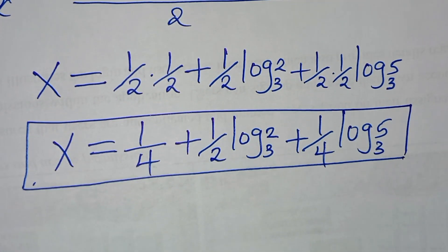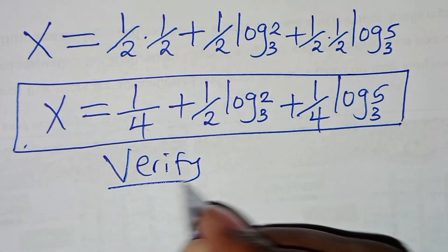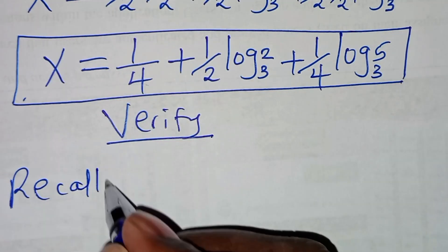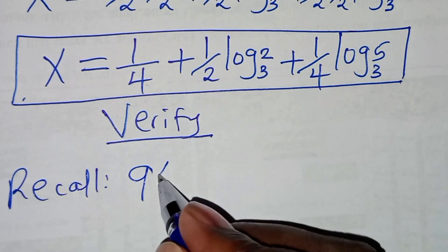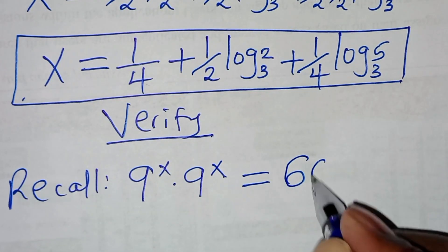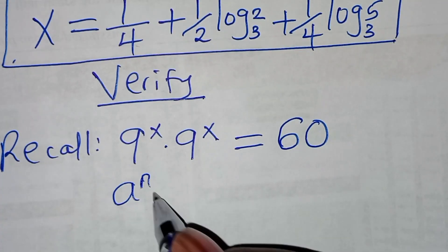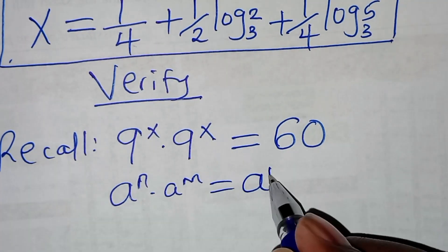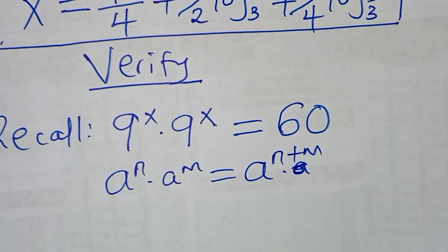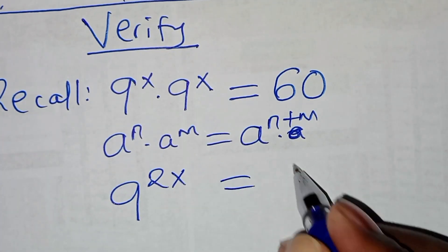So let's verify that this value of x satisfies the equation. If you recall, we are saying that 9 to the power x times 9 to the power x is supposed to give us a value of 60. This implies that, using the exponent property a^n times a^m equals a^(n+m), we have 9 to the power x plus x, which is 2x, and this should give us a value of 60. Let's substitute the value of x.